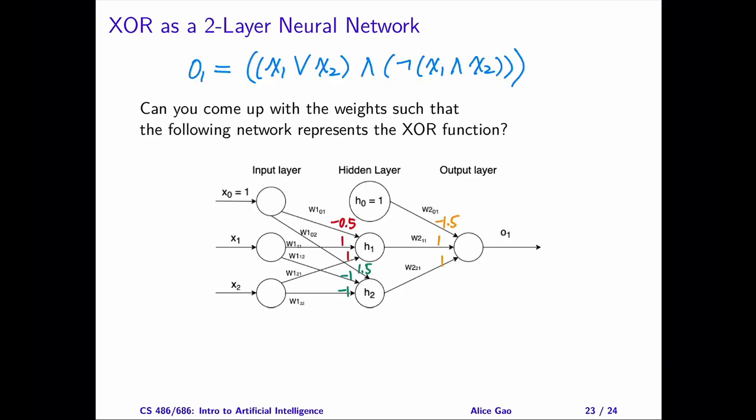Here is one possible solution. There are many solutions to this problem. I've rewritten the XOR function as a combination of AND, OR, and NOT. We already know how to represent all of these simpler functions using perceptrons. Please watch a separate video for detailed explanations.